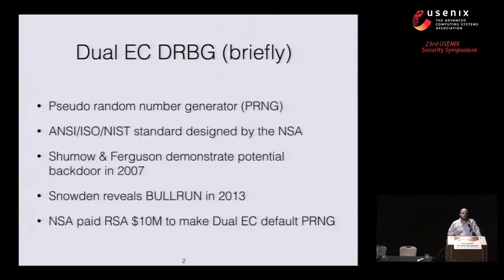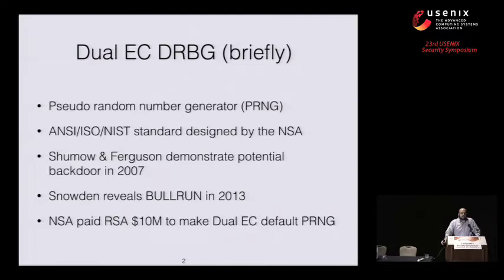The Dual Elliptic Curve Deterministic Random Bit Generator is a pseudo-random number generator designed by the NSA and subsequently standardized by ANSI, ISO, and NIST. Shortly after the standard was published, Shumo and Ferguson, researchers at Microsoft, demonstrated that there was a potential backdoor in Dual EC, but people thought no one was actually using it, so they didn't pay much attention. However, Edward Snowden recently revealed Project Bull Run, which had as one of its goals the weakening of commercial cryptography, and subsequently Reuters reported that the NSA paid RSA $10 million to make Dual EC the default PRNG in their TLS libraries.